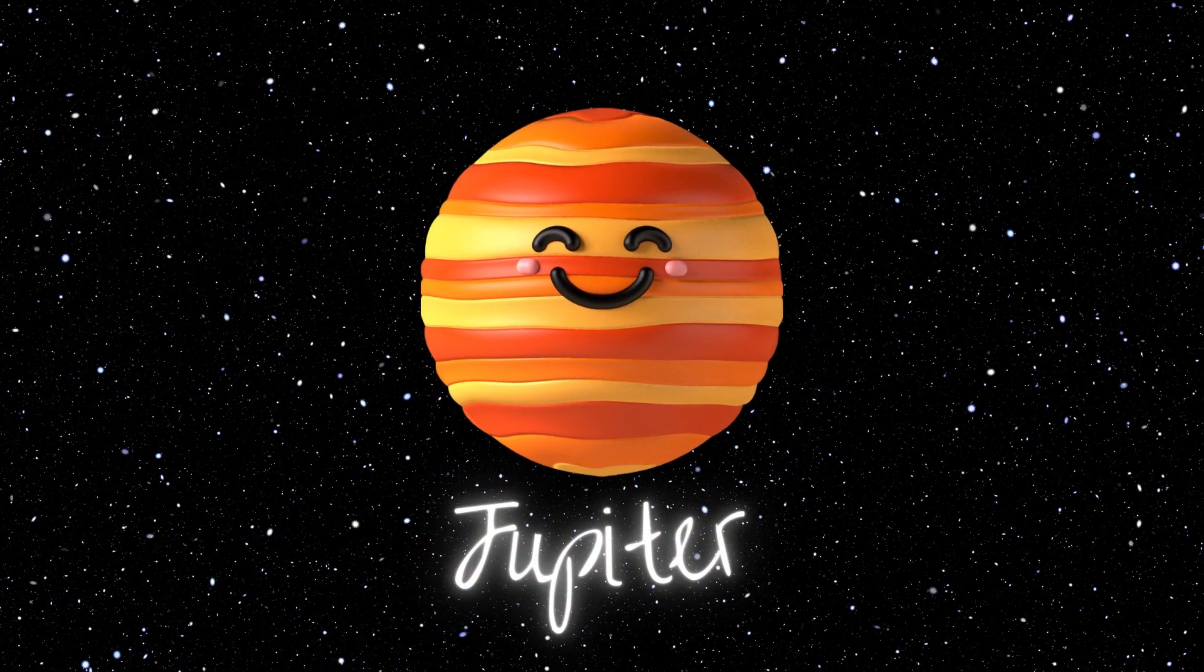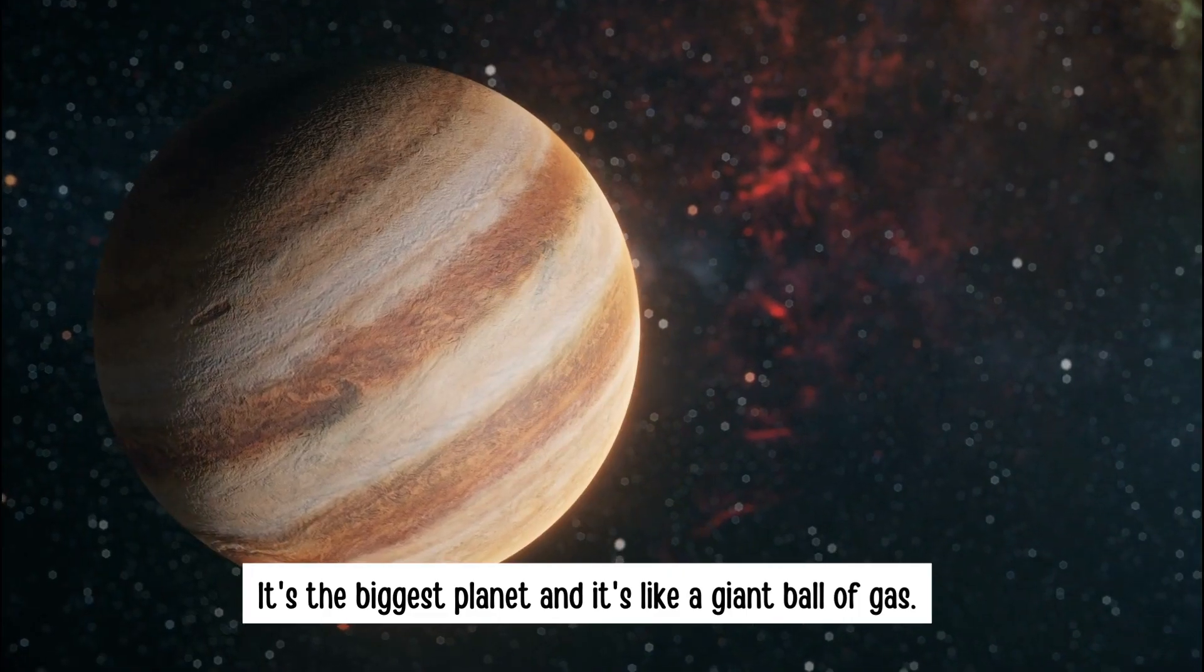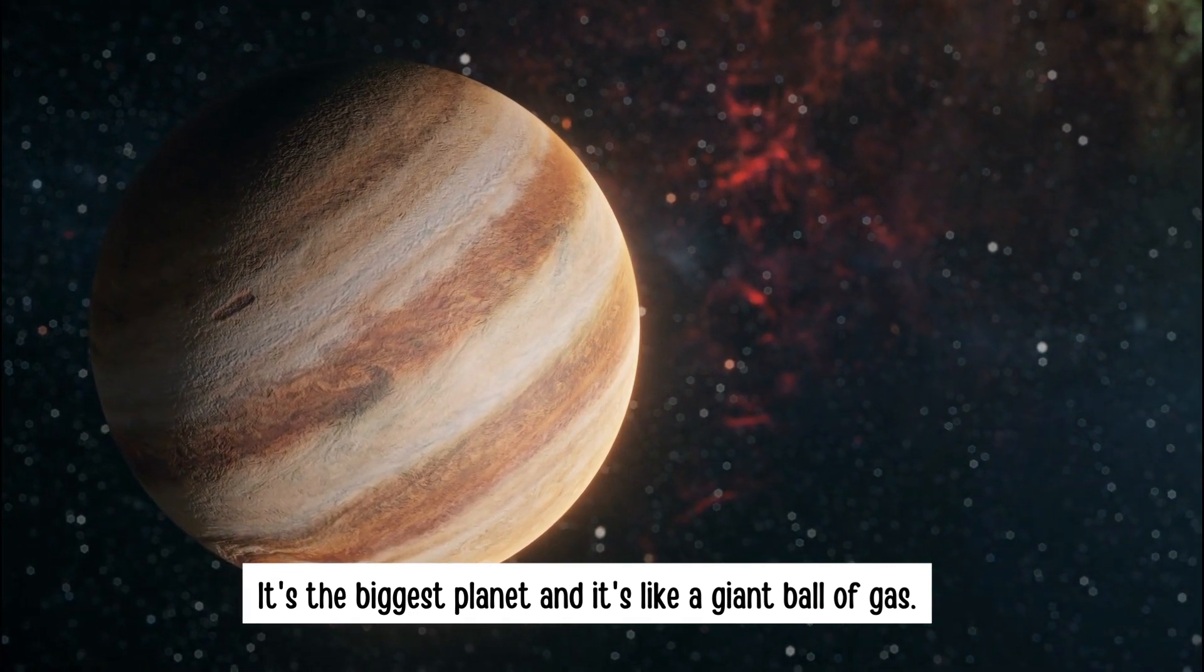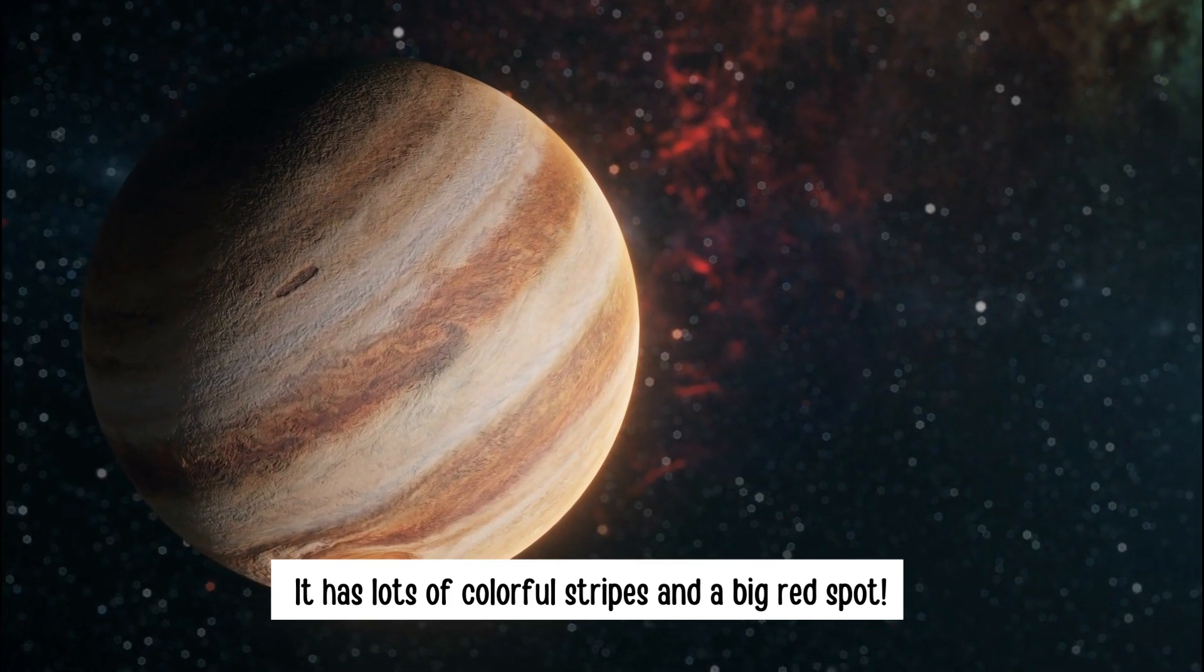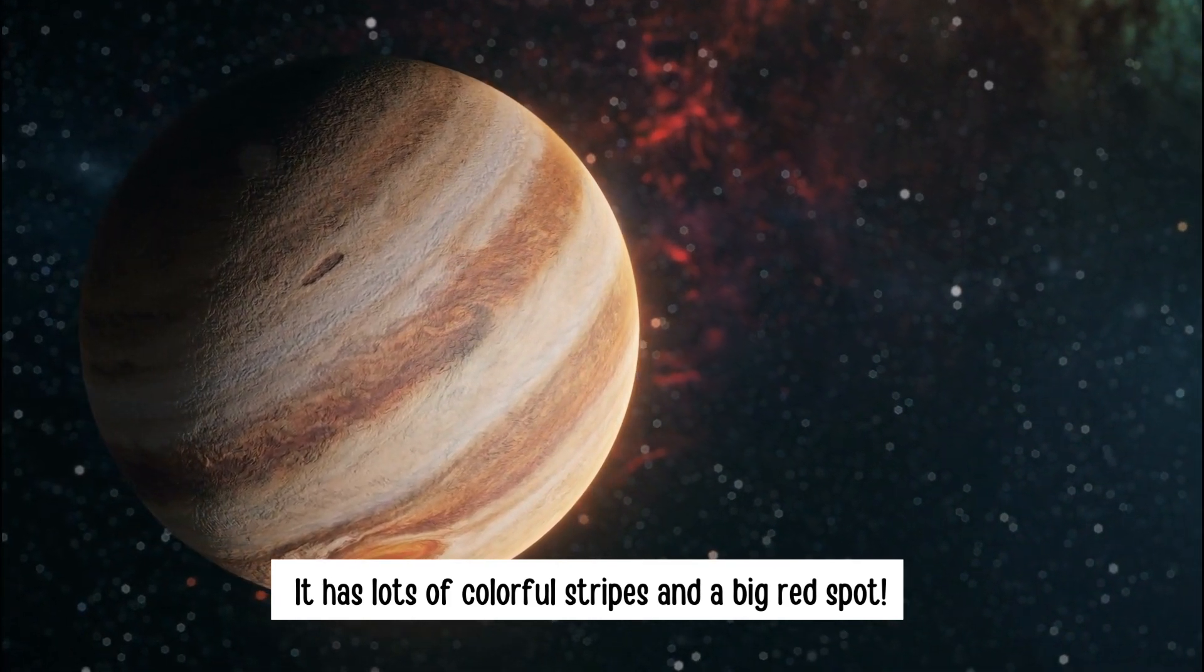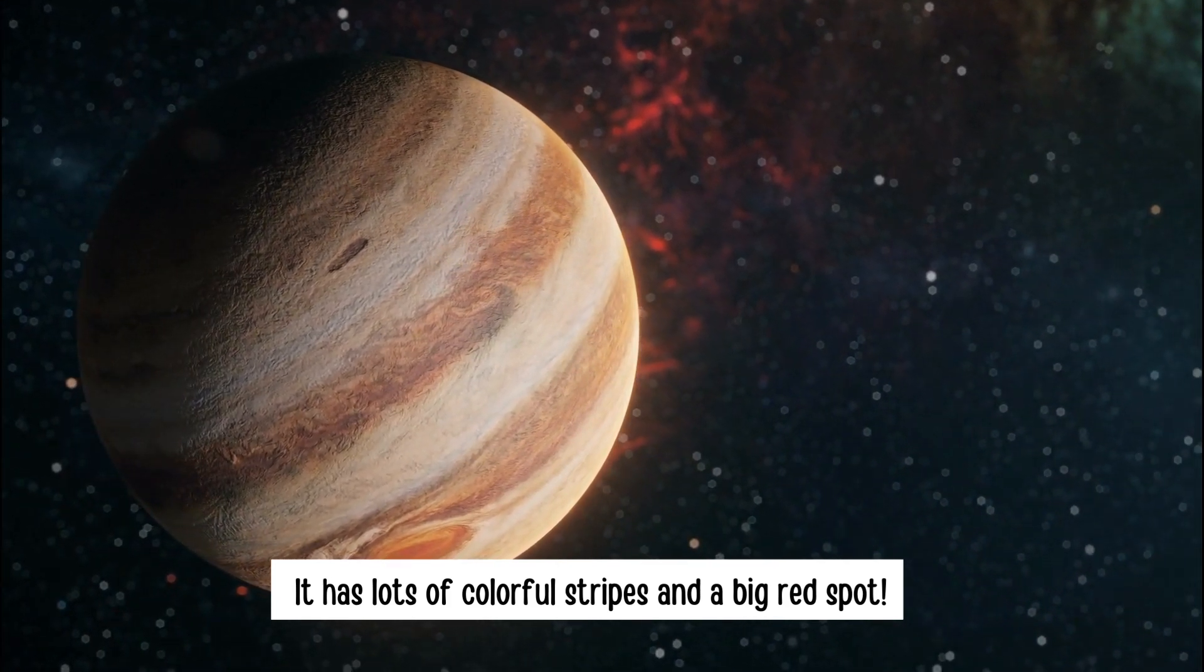Jupiter. It's the biggest planet and it's like a giant ball of gas. It has lots of colorful stripes and a big red spot.